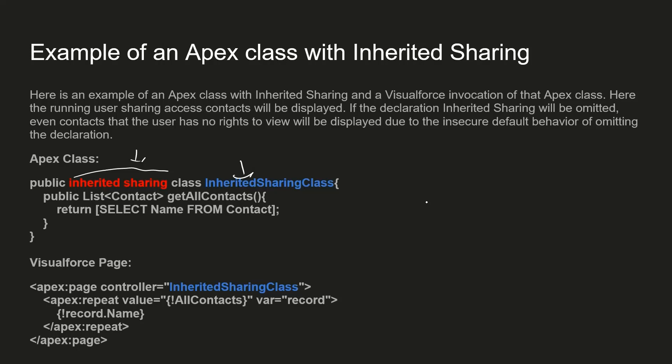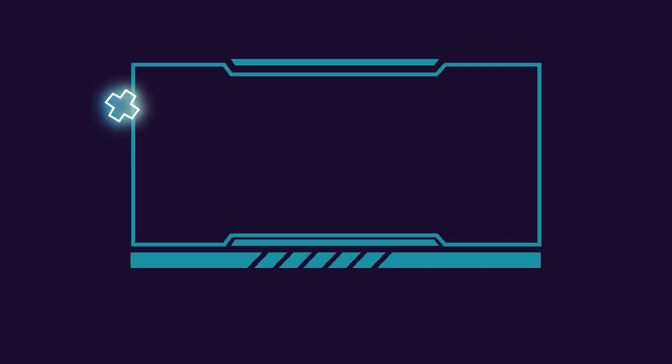Since an Apex class with inherited sharing runs as with sharing when used as a Visualforce page, all the records that a particular user has access to will be displayed in the Visualforce page. That covers all three keywords: with sharing, without sharing, and inherited sharing.